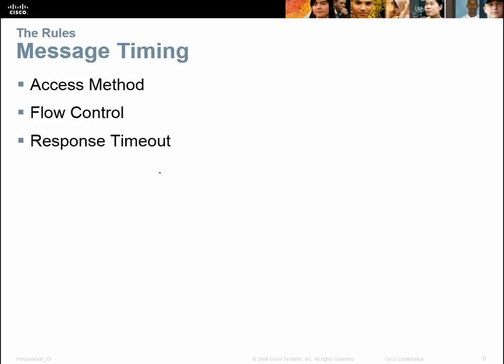Just like size, we also have to have timing. We have to know our speeds. We have to have the access method, flow control, and response timeout. The access method governs how we access the network and ensures packets don't collide with each other. The response timeout prevents packets from hanging out too long — if we keep sending packets they'll flood the system and it'll become overloaded. So the response timeout shuts it down after a while so it won't overload the system.